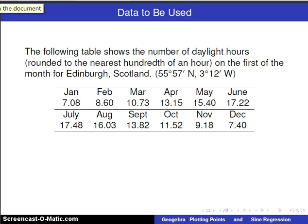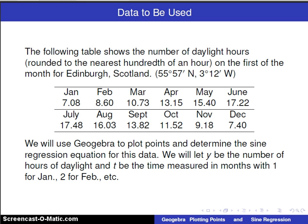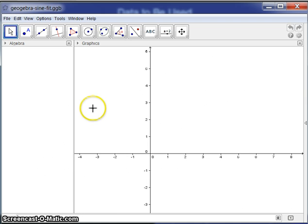So here's the data we're going to use. This shows the number of daylight hours for Edinburgh, Scotland. What we are going to do is use GeoGebra to plot these points and to determine the sine regression equation. So we're going to let y be the number of hours of daylight, and t be the time measured in months, with 1 for January, 2 for February, and so on. And this is important to specify how you're defining your variables. So let's take a look at GeoGebra.